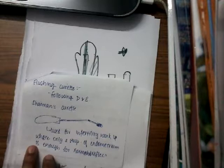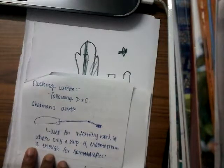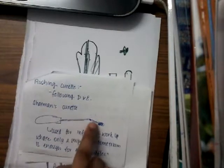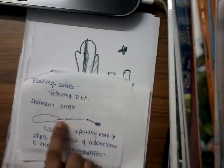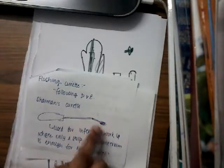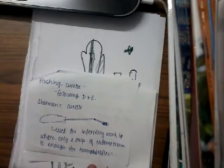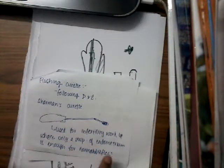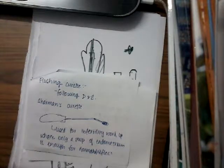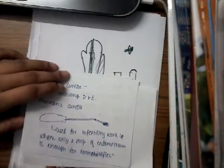A flushing curette can be used following D&C. There is also one more curette called the Charmin curette, where the curette has a blunt end on one side, a bent end, and a fenestration with a broad end. It is used in infertility workup when only one strip of endometrium is needed for hormonal assessment.